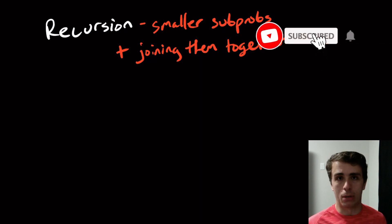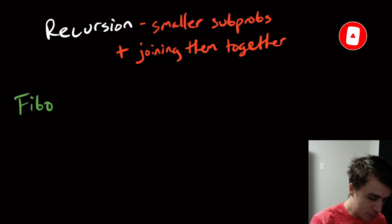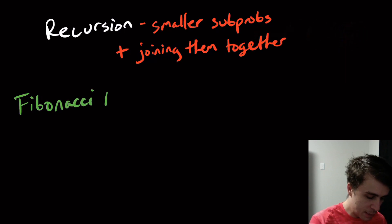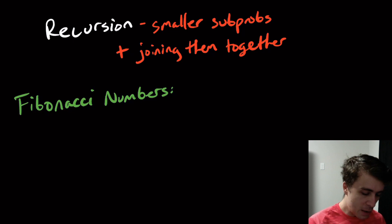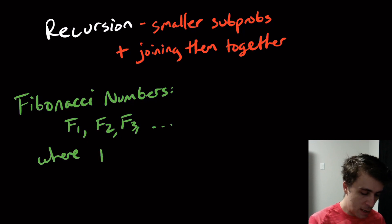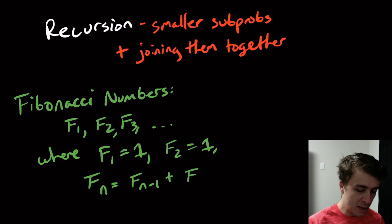That algorithm involves something called the Fibonacci numbers. You probably already know what these are, but in case you don't: they are the numbers F1, F2, F3, etc., where F1 is 1, F2 is also 1 — there are multiple ways to define this — and F(n) equals F(n−1) plus F(n−2).